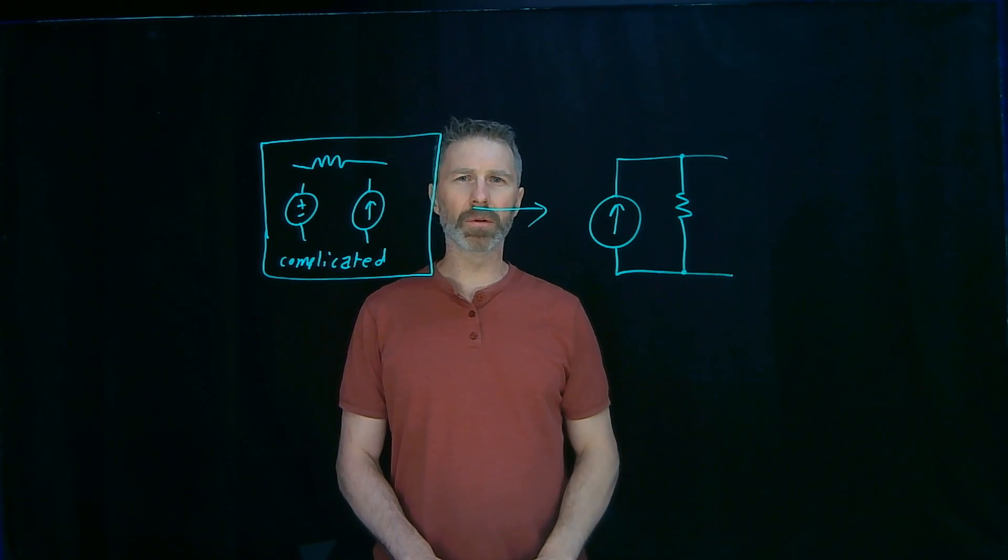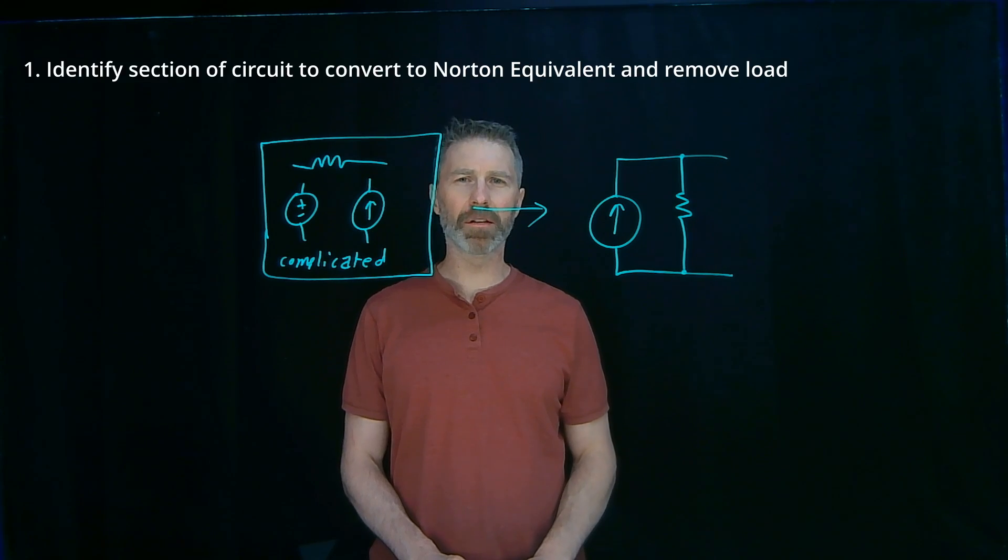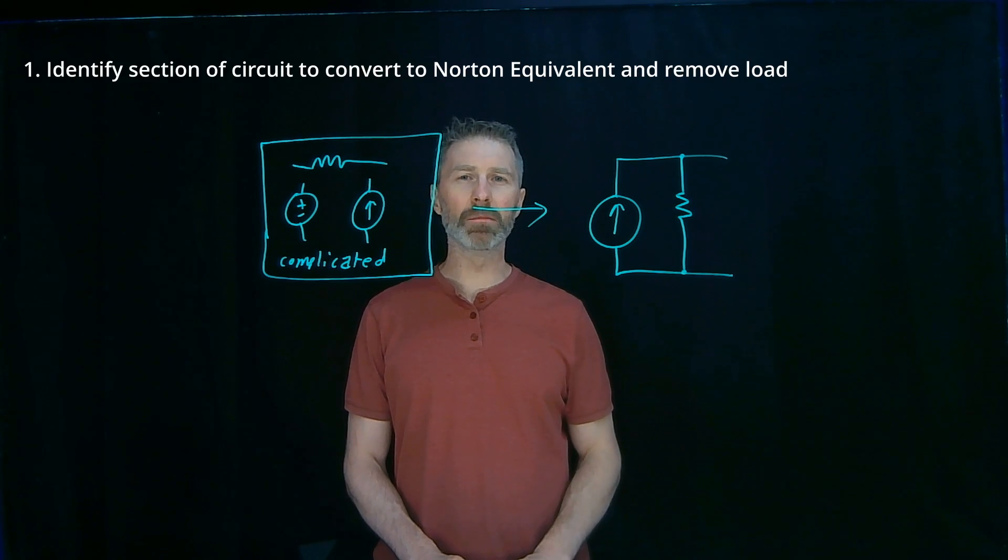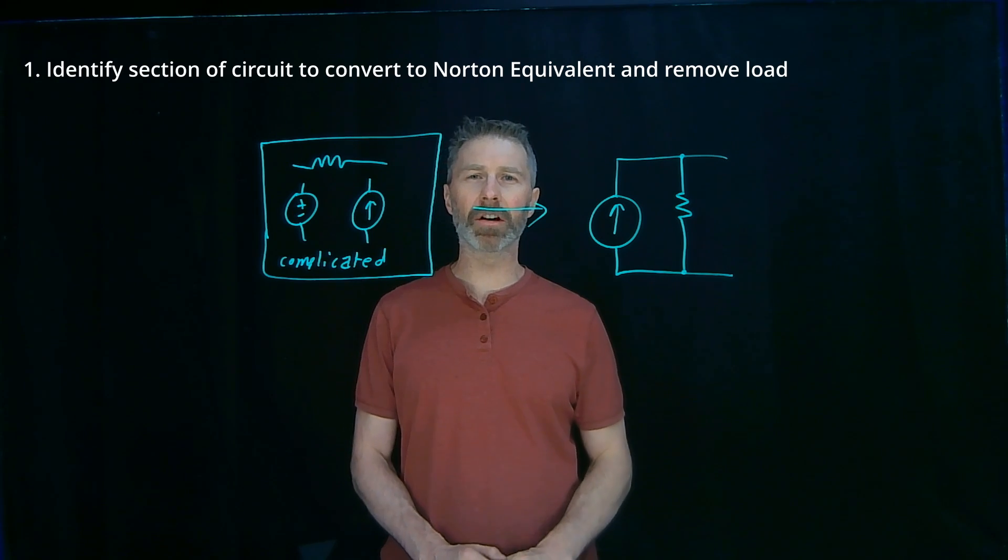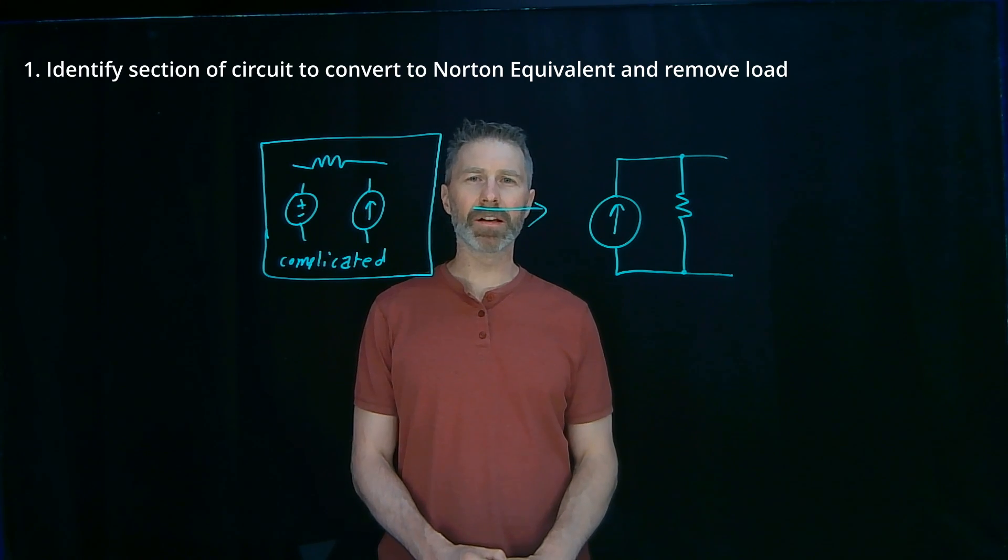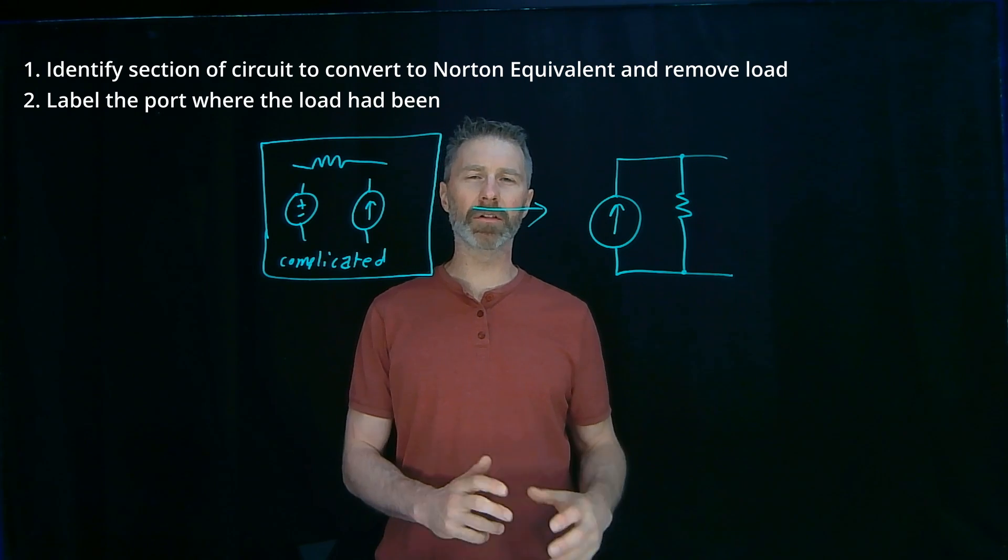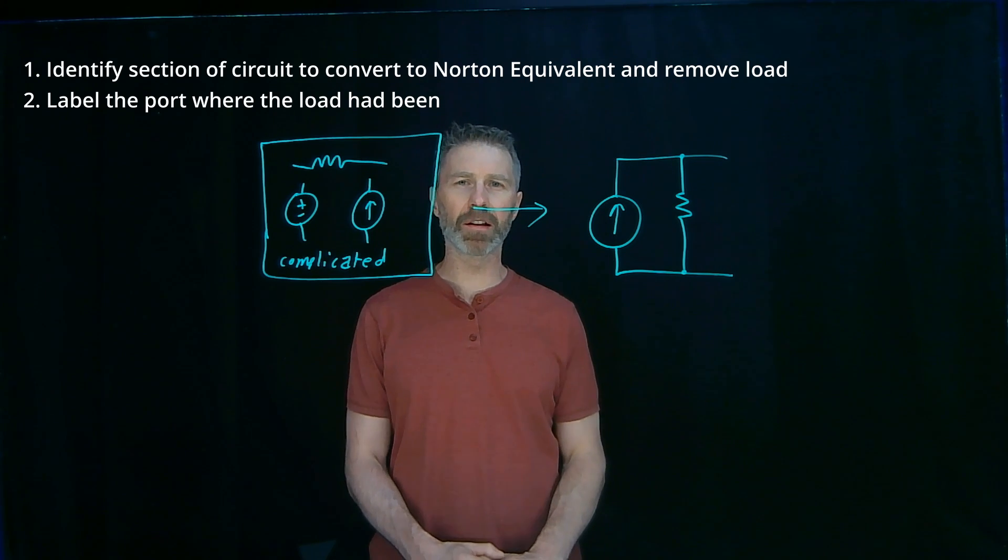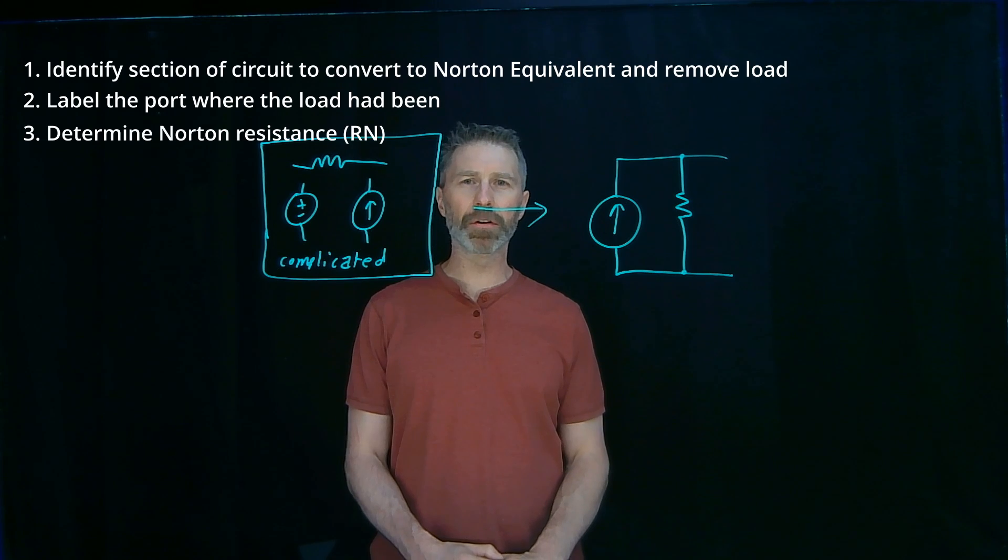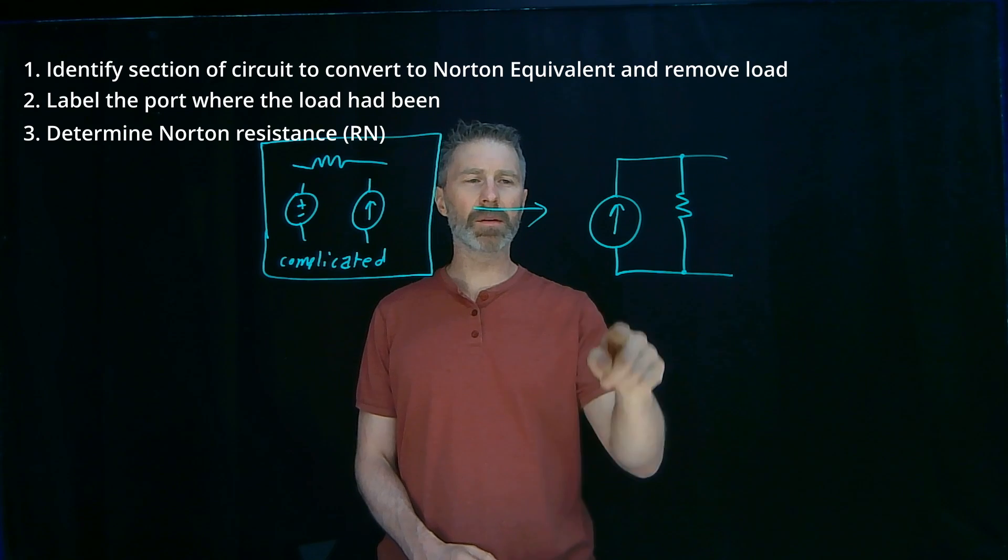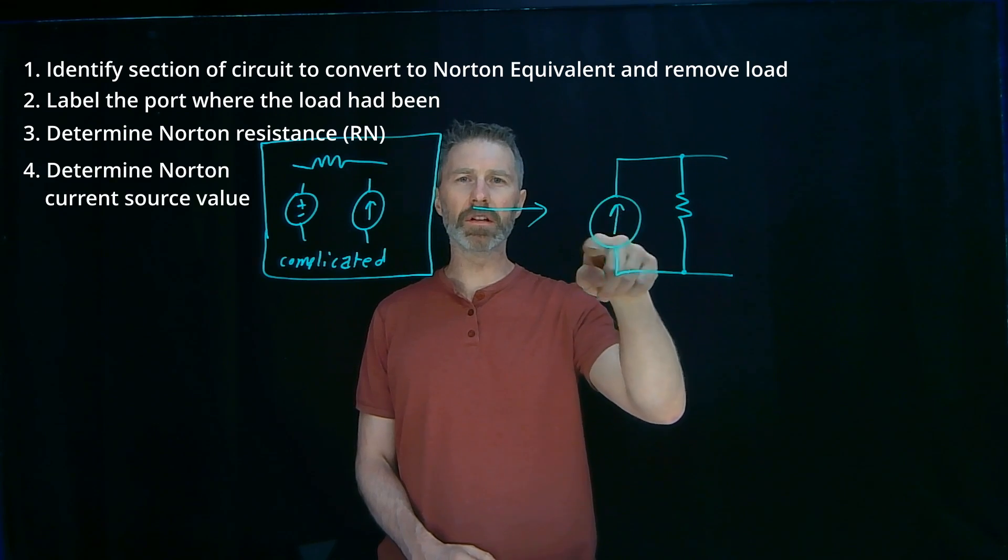to create the Norton equivalent involves a number of steps. The first step is to identify the part of the circuit to convert to the Norton equivalent, and remove the load, the part you're not Nortonizing, remove that from the circuit. The second step is to label that port so you can identify it if you ever make changes to the circuit. The third step is to determine the Norton resistance. The fourth step is to determine the current.